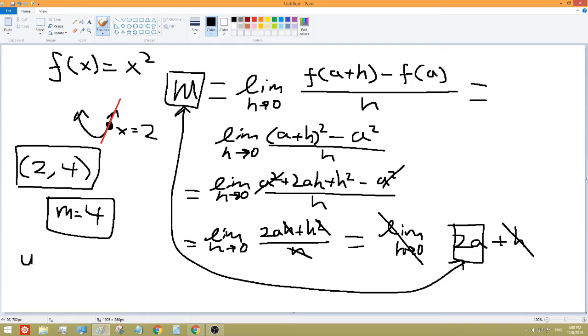Well, point-slope form is Y minus the Y value equals M, the slope, times X minus the X value. So that would be our form, point-slope form. And we just plug in the values Y minus 4 equals 4 times X minus 2.